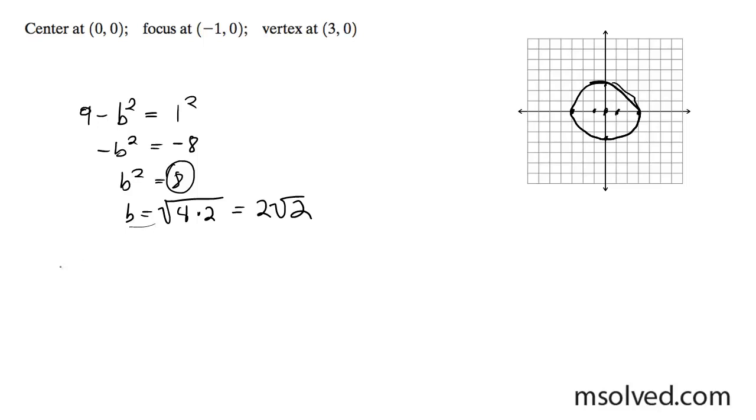And our equation's going to be x squared over 9 plus y squared over 8 equals 1. That's it.